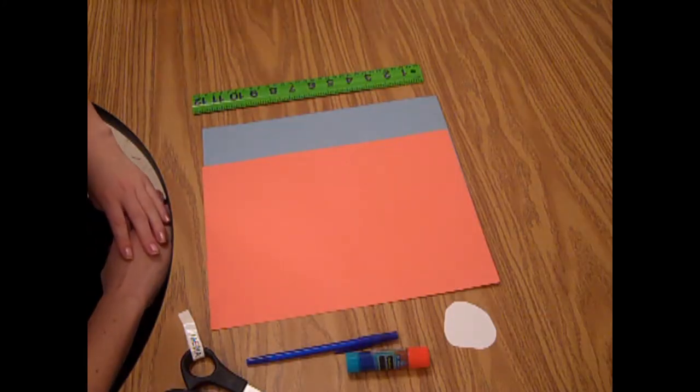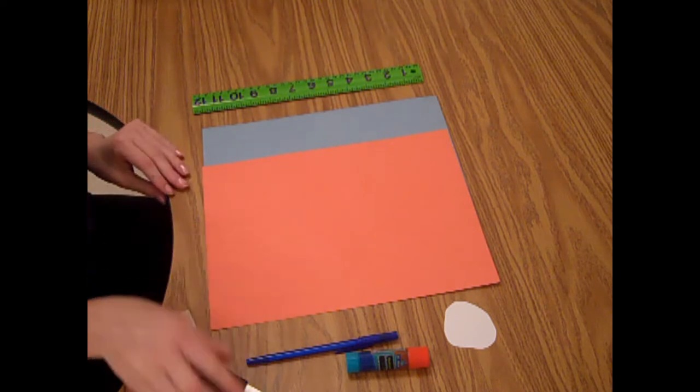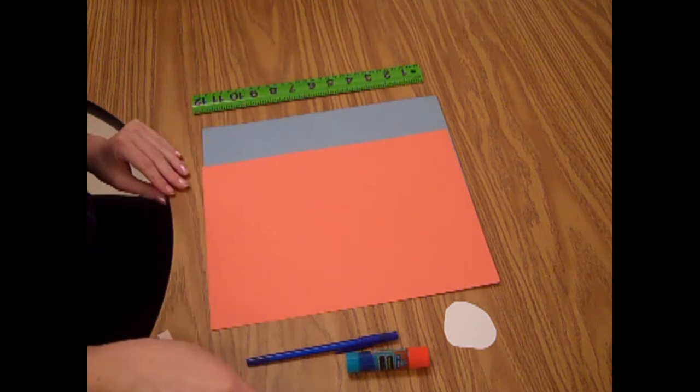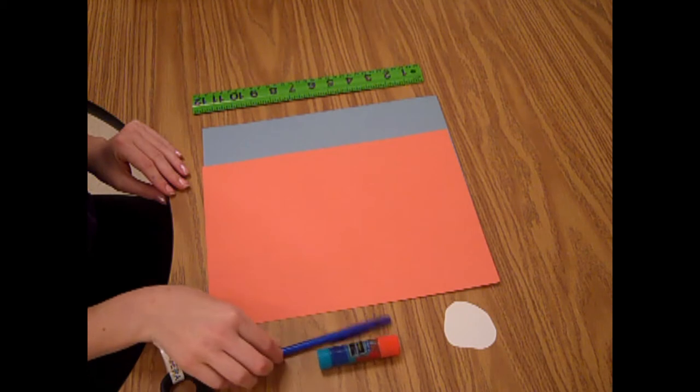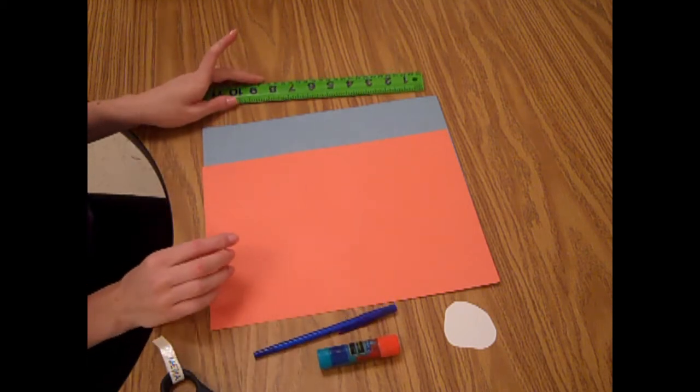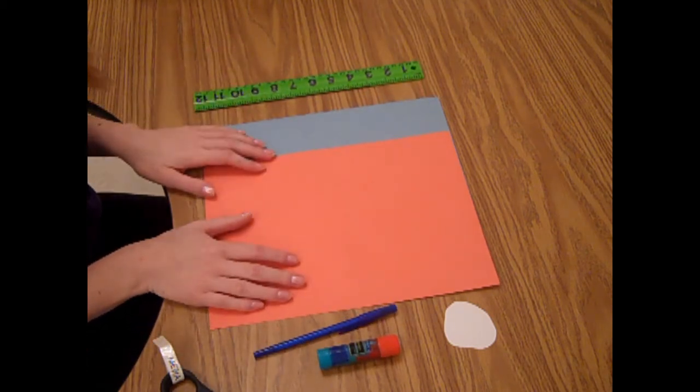Today we're going to make a flip pop-out book. What you'll need is scissors, glue, a pen or pencil, your ruler, and the colored paper you're going to want.